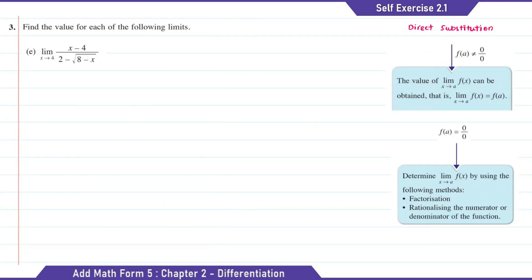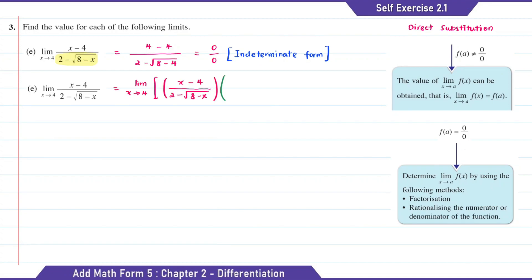Question E: we want to substitute x equal to 4 as x is approaching 4. The answer of this will equal to 0 over 0. To find the limit value for E, we need to rationalize the denominator. The conjugate for the denominator will be 2 plus square root of (x minus x).